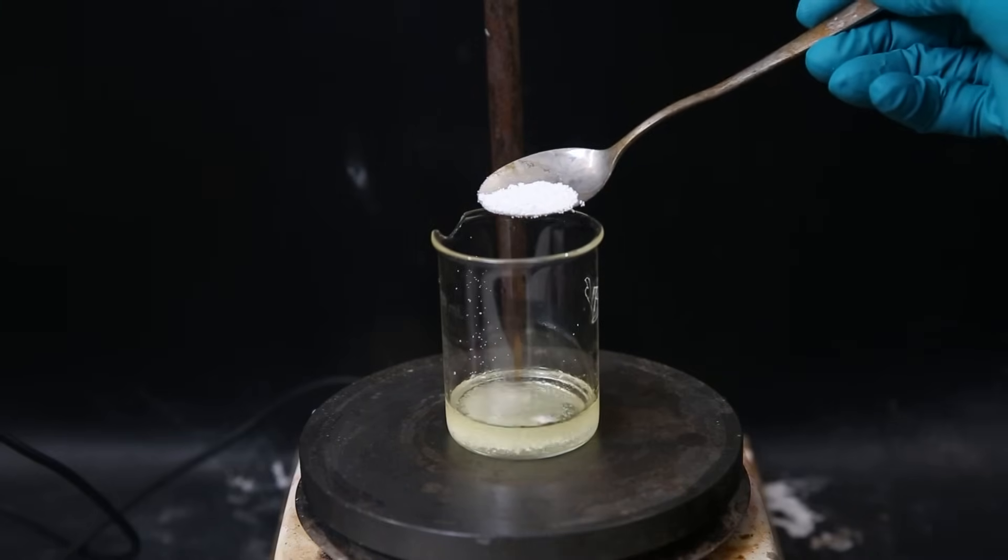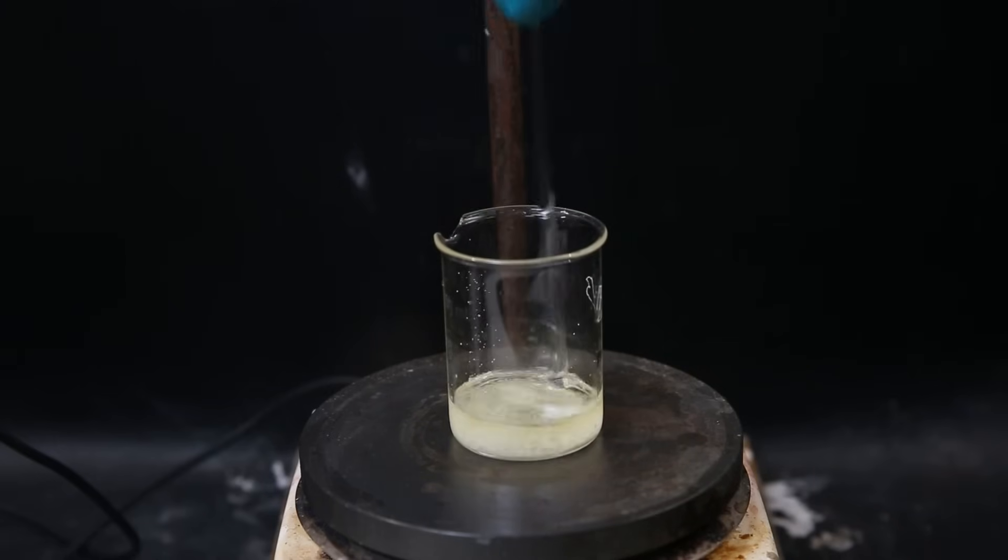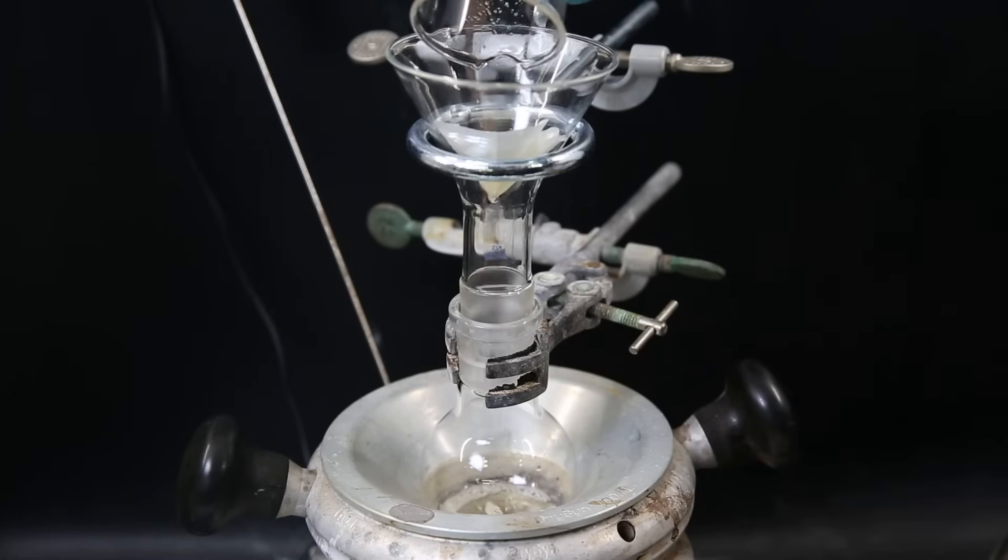Now I take the tetraethyl lead and add some calcium chloride to remove any remaining water. I let it sit for a bit, and then set up a flask with a funnel. In the funnel, I put a small filter paper, and then filter all of the tetraethyl lead through.